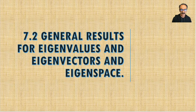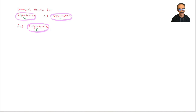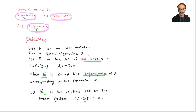General results for eigenvalues and eigenvectors and eigenspaces. From 7.1 we have now added the eigenspace, so we have three things: lambda, v, and E for eigenspace. Definition: let A be an n by n matrix. For a given eigenvalue lambda_i, let E_sub_i be the set of all vectors v satisfying Av equals lambda_i times v. Then E_sub_i is called the eigenspace of A corresponding to eigenvalue lambda_i. This E_sub_i is the solution set to the linear system A minus lambda_i times v equals zero.